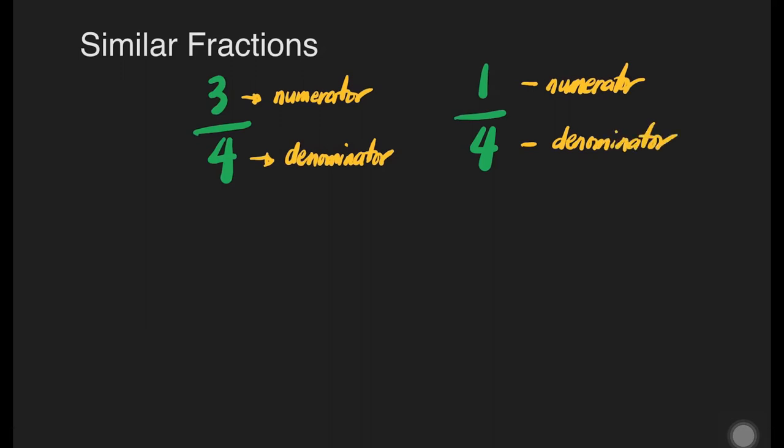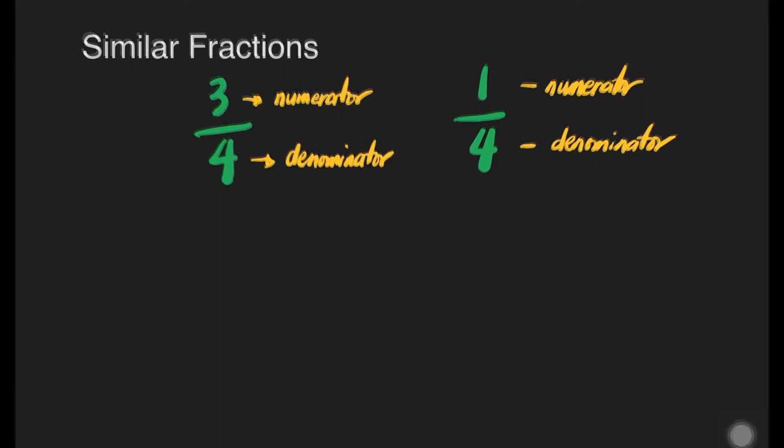So they have the same denominator. Let us draw in diagram how does 3 fourths look like and how does 1 fourth look like. Okay, let's have the 3 fourths. It means that the whole is divided into 4 equal parts and the 3 parts are shaded.